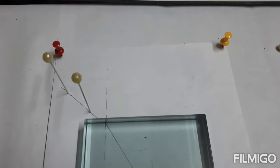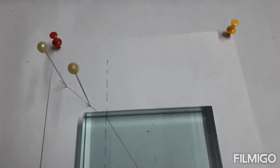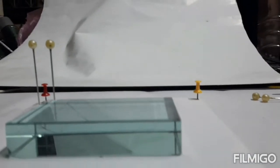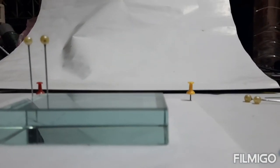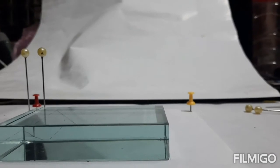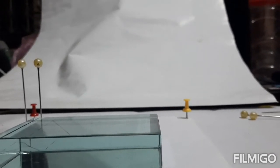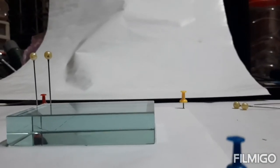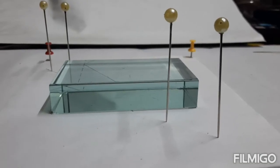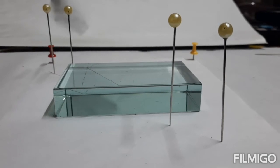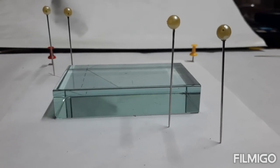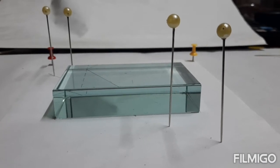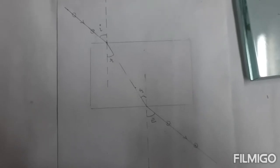Two pins are placed on the incident ray and now through the glass block we can see the feet of the pins visible. We are going to adjust those pins and find out the emergent ray. Emergent ray is traced with the help of the two pins. Now we will remove the pins and draw the emergent ray.